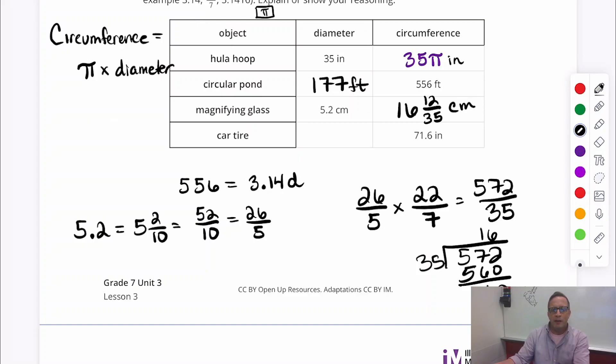Your favorite way to write an answer, right? In fraction form, using fractions. That's probably the best way to do it. Not always for everybody, but it works. Alright. And then for the car tire, I'm just going to divide that by 3.14. So 71.6 divided by 3.14, that's around 22. It's like 22.8. Let's write that down. 22.8 inches.